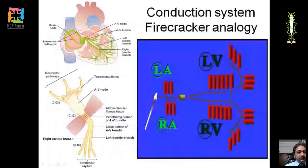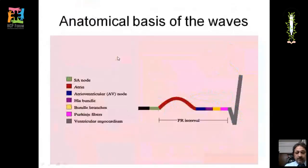Cardiac conduction starts at the SA node, activates both atria, then reaches the AV node. From the AV node, the bundle of His arises and divides into right and left bundles, then activates the ventricular myocardium through the Purkinje fibers. The PR interval represents the time from atrial depolarization to ventricular depolarization.